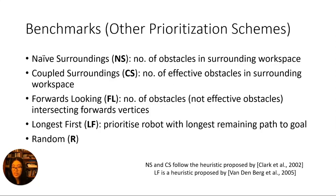Longest first lets the robot with the longest remaining optimal path go first. And finally, random is random. In the case of ties, we tie-break according to longest first, but if that's also a tie, then we tie-break randomly.